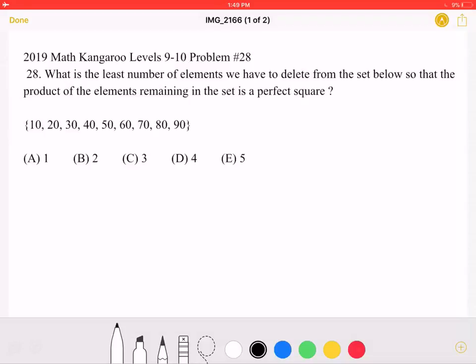This is the 2019 Math Kangaroo Levels 9-10, Problem Number 28. What is the least number of elements we have to delete from the set below so that the product of the elements remaining in the set is a perfect square?